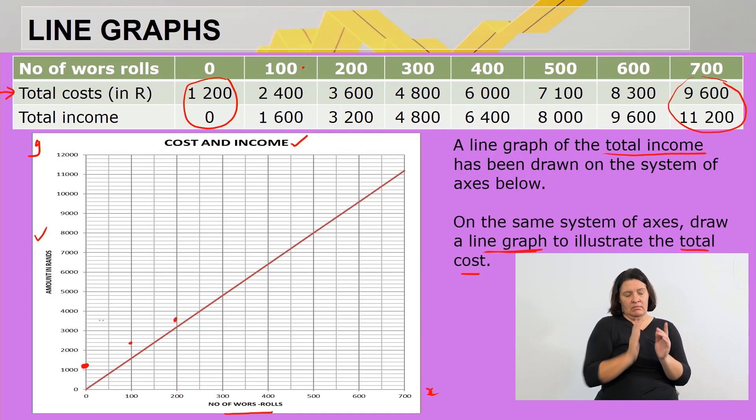Then I'll be looking at the next one: 300 rolls, cost will be R4,800, just below 5000, we agree, it's right there. Then 400 of these rolls will be R6,000. So I go 400, 6000. Let's quickly find the correct point, it's here, can you see where they intersect?